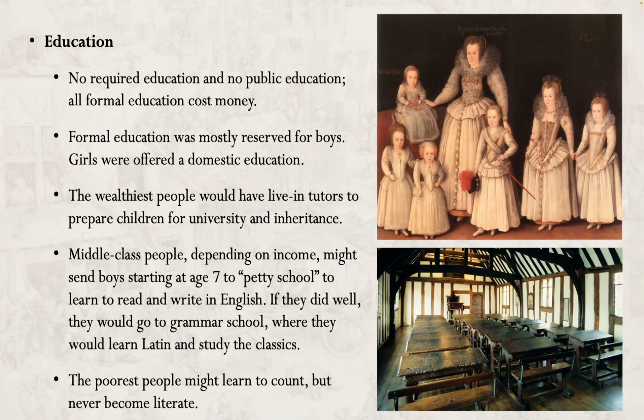Middle-class boys would start around age seven at what was called petty school, where they would learn the basics of reading and writing in English and maybe a little numeracy. If they did well, they would go on to grammar school — which did have to be paid for, though it wasn't super expensive. It was still out of reach for the laboring and lower classes. The focus of grammar school was not English grammar but Latin grammar — that's kind of why it's called that. They would learn Latin and could speak it fluently, essentially as well as the most educated Latin experts in universities today.